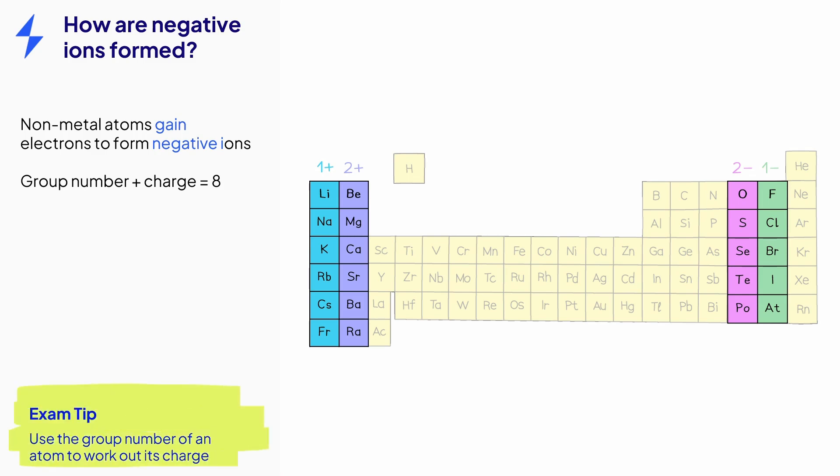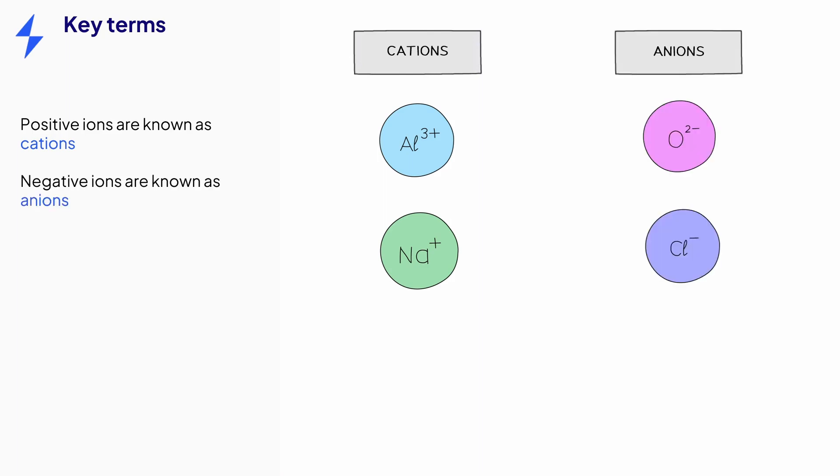It is useful to remember that you can use the periodic table given to you in an exam to work out the charge an ion will have. There are a couple of terms that you need to know in relation to ions. We refer to positive ions as cations. For example, the aluminium 3 plus ion and sodium 1 plus ions shown here. Negative ions are known as anions, and the oxide ion and chloride ions are examples of anions. Students often find it difficult to remember which term belongs to which ion. But an easy way to remember this is that the word anion stands for a negative ion. As long as you can remember the meaning of one of these terms, you can work out the other name, and it saves you having to remember both.